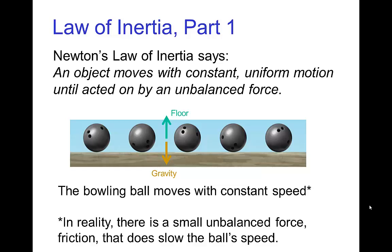If all the forces are balanced, like in this example of a bowling ball rolling on the floor, the weight of the bowling ball — that downward force of gravity — is being balanced by the upward support of the floor. So in this case there's no unbalanced force and we have constant uniform motion: the speed of the bowling ball is constant and it moves in a straight line. This is a bit of an approximation because there's going to be a little bit of friction that's going to slow the motion, but pretty much Newton's Law of Inertia applies here.